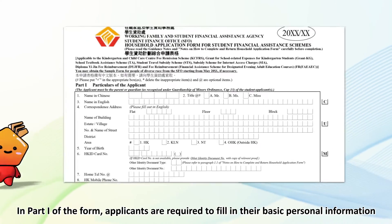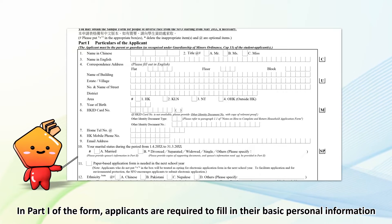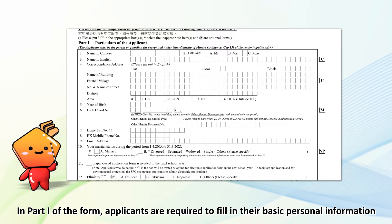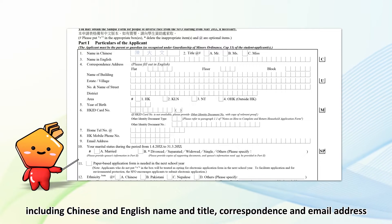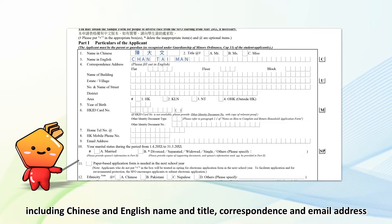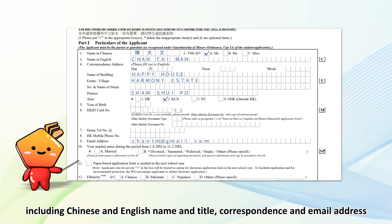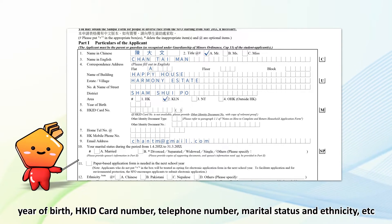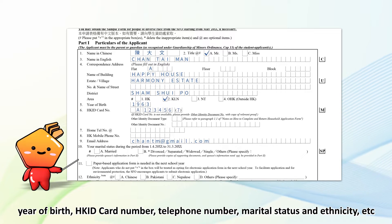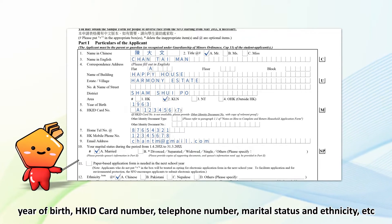In Part 1 of the form, applicants are required to fill in their basic personal information, including Chinese and English name and title, correspondence and email address, year of birth, Hong Kong ID card number, telephone number, marital status, and ethnicity, etc.